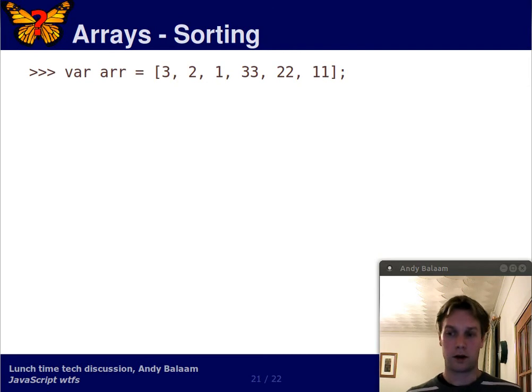So, that's good. That's not a WTF. Alright. So, let's have a look at this. Let's look at this specially handcrafted array. We're going to call it Arror, and it's got the numbers 3, 2, 1, 33, 22, and 11 in it. Okay?